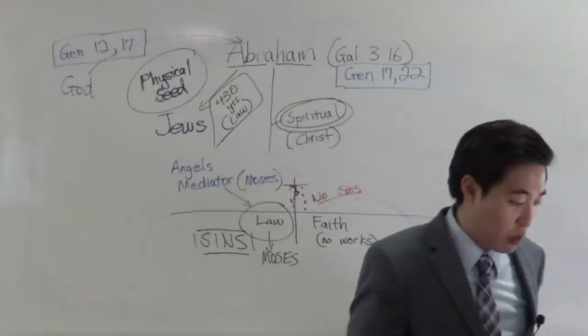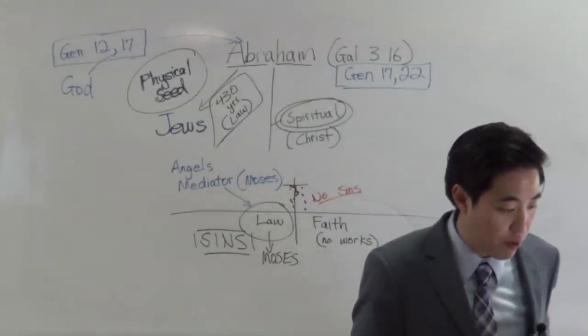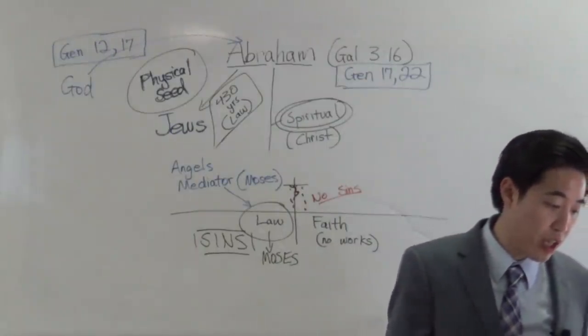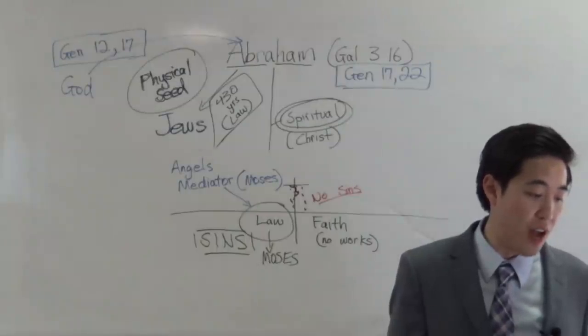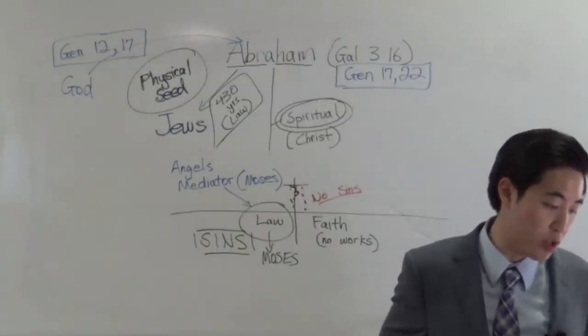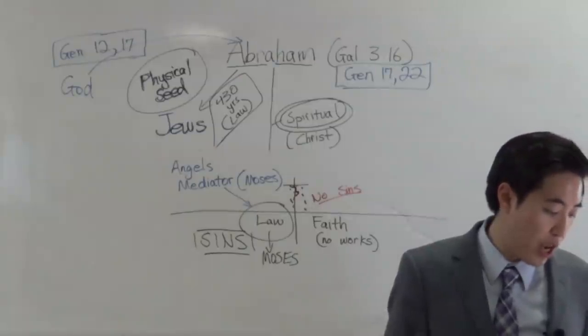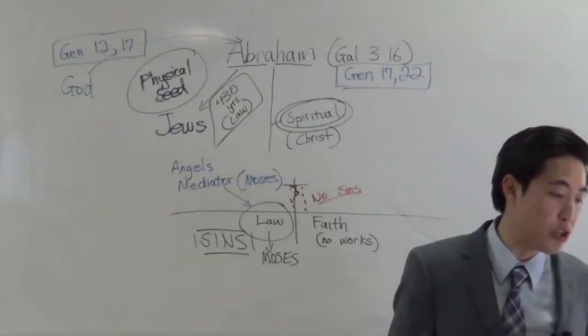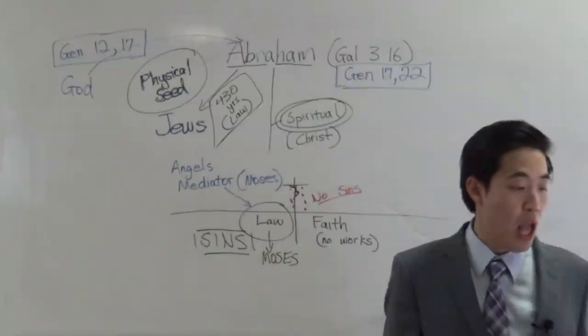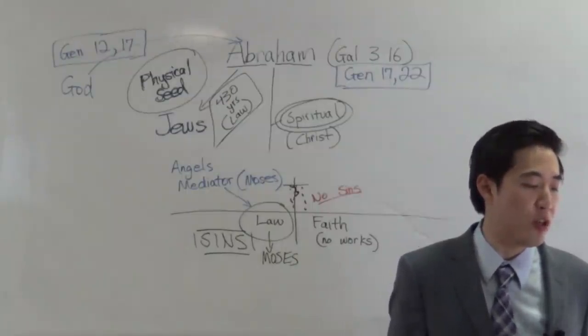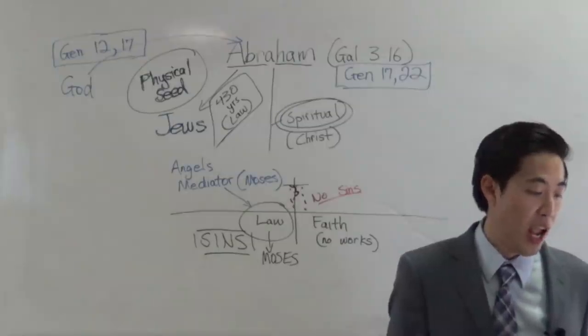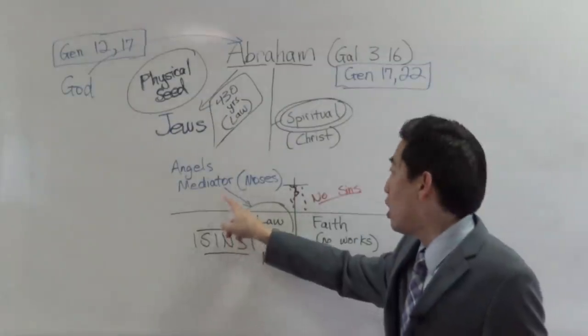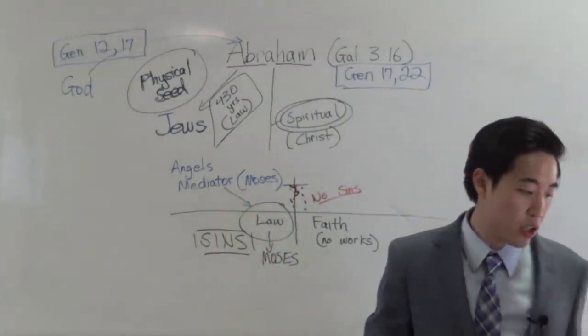We're going to look at Acts chapter 7, and then we'll notice that at verse 32: Saying, I am the God of thy fathers, the God of Abraham, and the God of Isaac, and the God of Jacob. Then Moses trembled, and durst not behold. Now, notice that Moses, he is talking to the burning bush. Now, when he is talking to the burning bush, notice in verse 30 who this was. And when 40 years were expired, there appeared to him in the wilderness of Mount Sinai. And who? Angel of the Lord in a flame of fire in a bush. That's why I see angels. It was handed down by angels. And then the mediator would be concerning Moses.